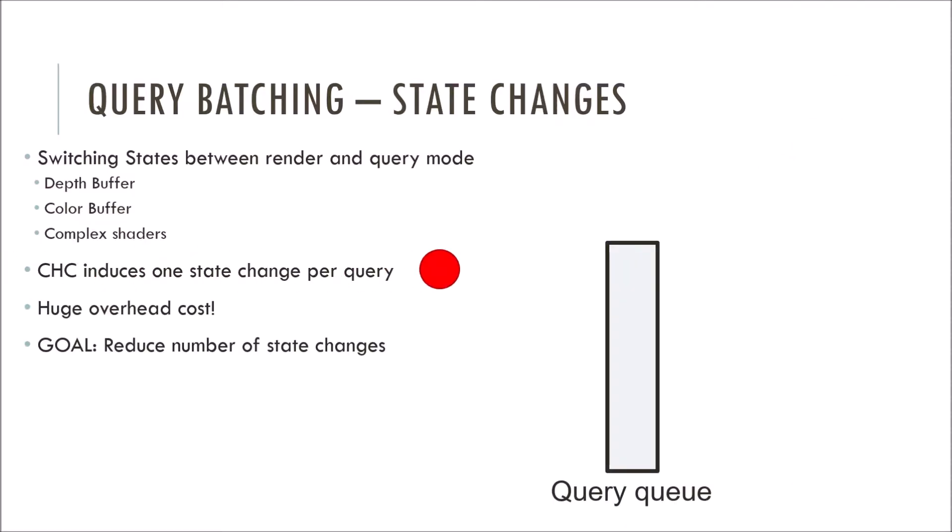In order to switch between render and query mode, there needs to be a state change. What I mean by state change is that we have to disable writing to the depth and color buffers before we query, and then we must re-enable writing to the same buffers before we render. If we are using complex shaders too, we have to turn them on and off. The old CHC method would have to initiate a state change for every node that needs to be queried. As you can see, switching the states can get redundant. This switching of states has a huge cost. It turns out that changing the rendering state causes an even larger overhead than the query itself.